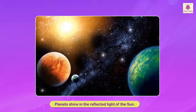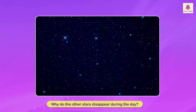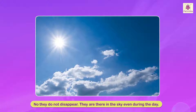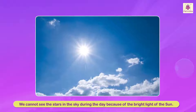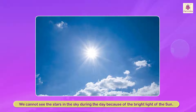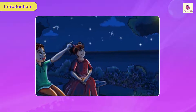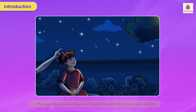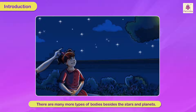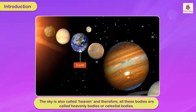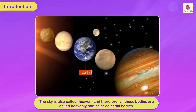Stars don't disappear during the day — they are there in the sky even during the day. We cannot see them because of the bright light of the Sun. This is what we see when we look at the night sky. Besides stars and planets, there are many more types of bodies. The sky is also called heaven, and therefore all these bodies including the Earth are called heavenly bodies or celestial bodies.